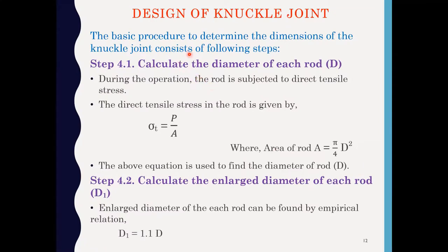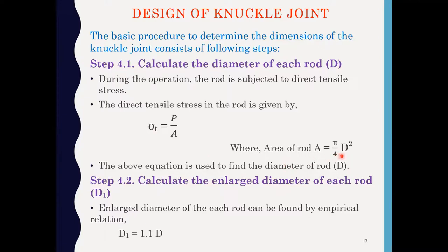The basic procedure to determine the dimensions of the knuckle joint consists of the following steps. Step 4.1: calculate the diameter of each rod, denoted by capital D. The rod is subjected to tensile stress, so Sigma T = P / A, where A is the resisting area = π/4 × D². By putting the permissible tensile stress Sigma T and P = 50 × 10³ N, we can calculate the diameter of the rod D.